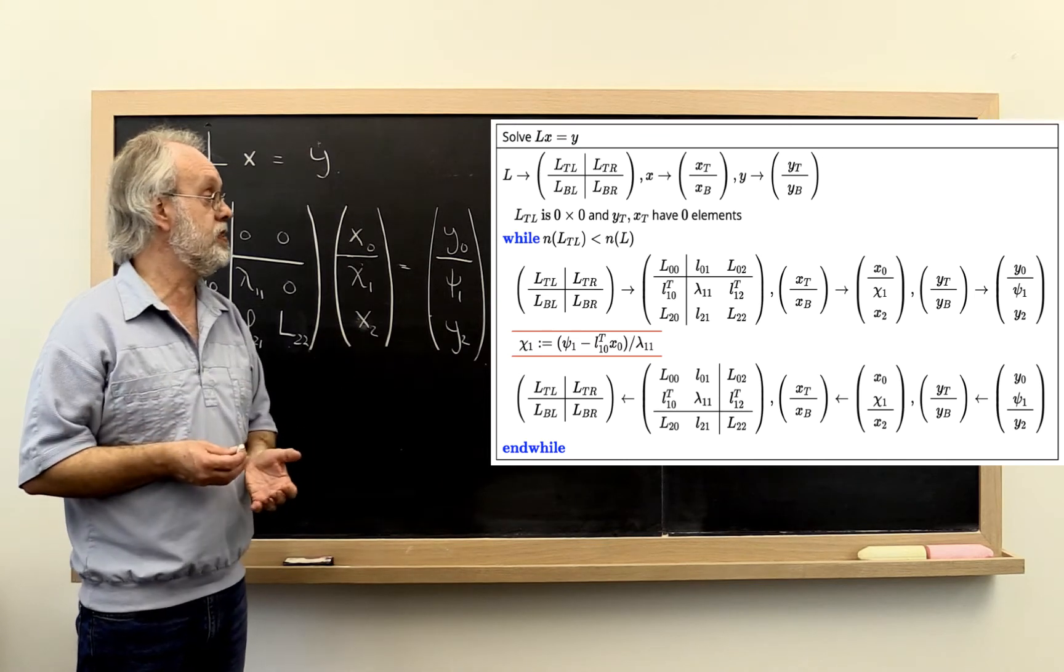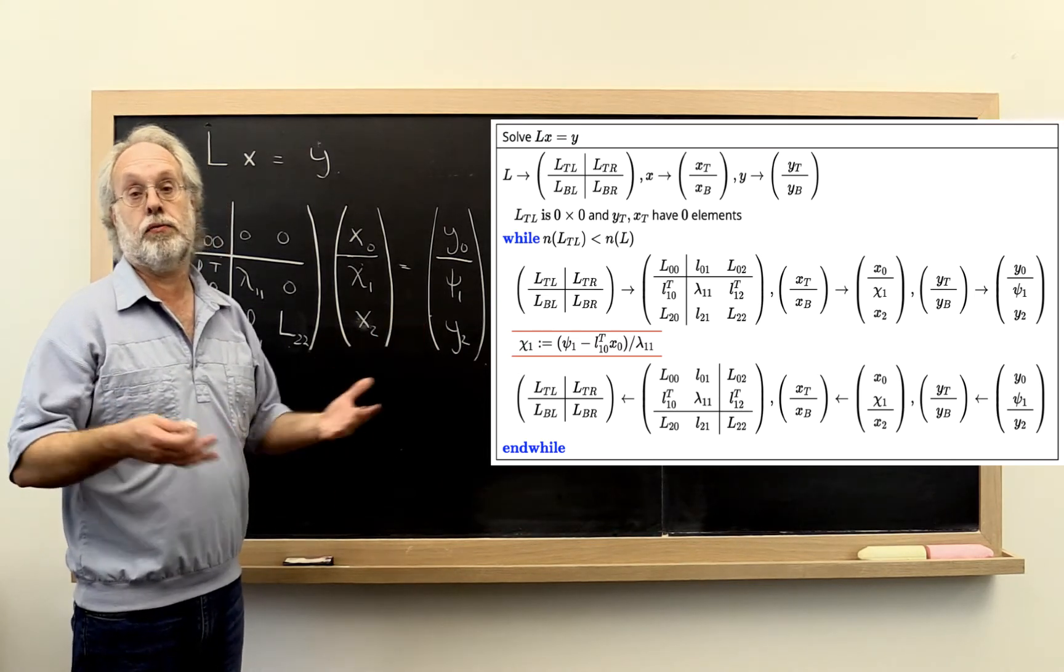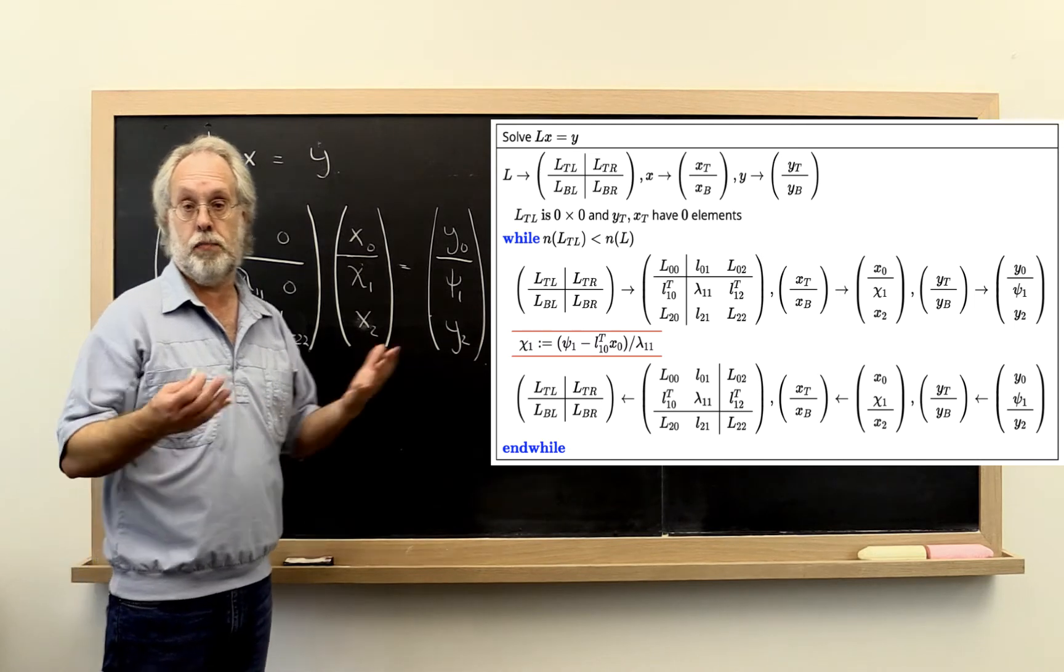And why do we use a dot product based algorithm? Well that's because we have error results for the dot product. So those probably will come in handy.